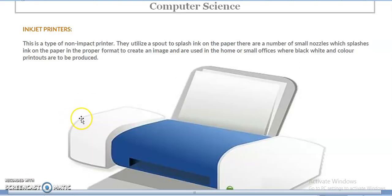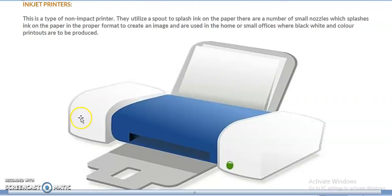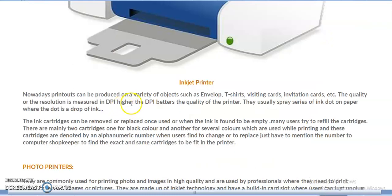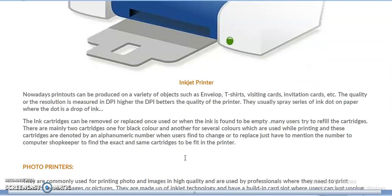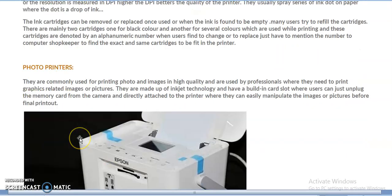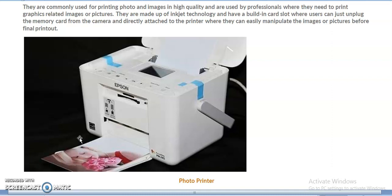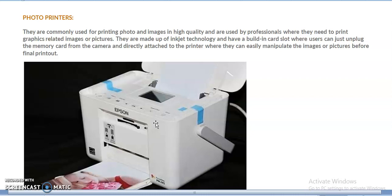Inkjet printers are very popular and common, also known as household printers. They utilize small nozzles that splash ink onto the paper to create images, and are used in small offices for black-and-white and color printouts. Nowadays, inkjet printers can print on a variety of objects such as envelopes, t-shirts, and visiting cards. Photo printers are a more advanced type used to take real photo printouts. These are the different types of printers categorized by their working as impact and non-impact printers.